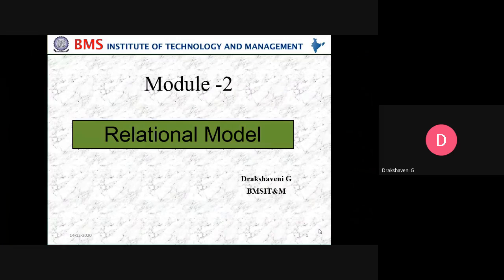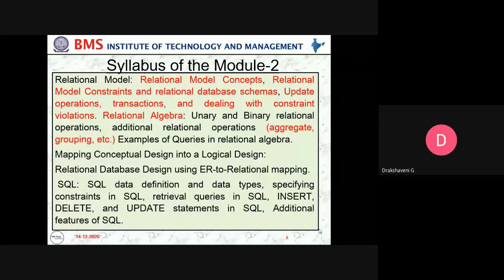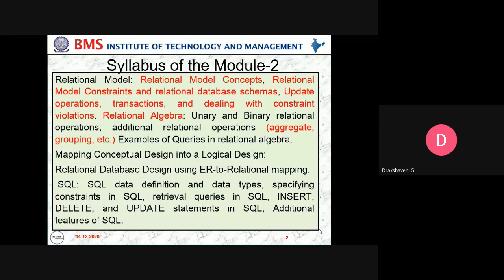We've done with the first unit revision in the last class, so now we start with the second unit. The second unit will cover the relational model concepts, relational model constraints, relational database schema, update operations, transactions, and dealing with constraint violations. Also covered are relational algebra operations like union, binary regulation operations, additional relation operations, aggregate grouping, examples of queries, relational algebra mapping concepts, conceptual design into logical design, relational database design using ER-to-relational mapping, SQL data definition and data types, specifying constraints in SQL, retrieval queries in SQL, insert, delete and update statements in SQL, and additional features in SQL.